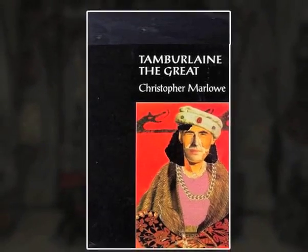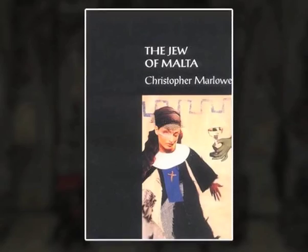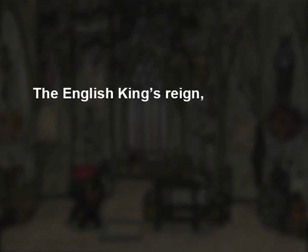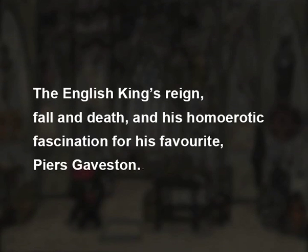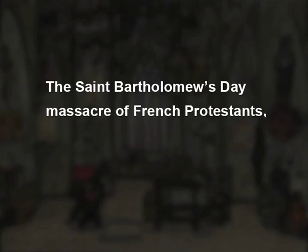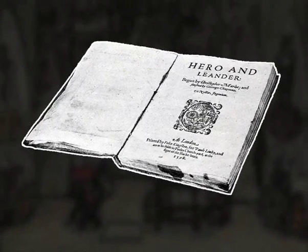His other plays include Tamburlaine the Great in two parts, based on the life of the Turkic warrior Timur or Tamburlaine who rose from a shepherd to the ruler of an empire; The Jew of Malta, an original plotline of Machiavellian intrigues surrounding the revenge of Barabbas, a Jew, against the city authorities; Edward II, which deals with the English king's reign, fall and death and his homoerotic fascination for his favourite Piers Gaveston; The Massacre at Paris, which deals with the Saint Bartholomew's Day massacre of French Protestants called Huguenots by Catholics in 1572; and of course Dr. Faustus. Marlowe's plays were immensely successful on the stage. He also wrote a mythological poem called Hero and Leander.